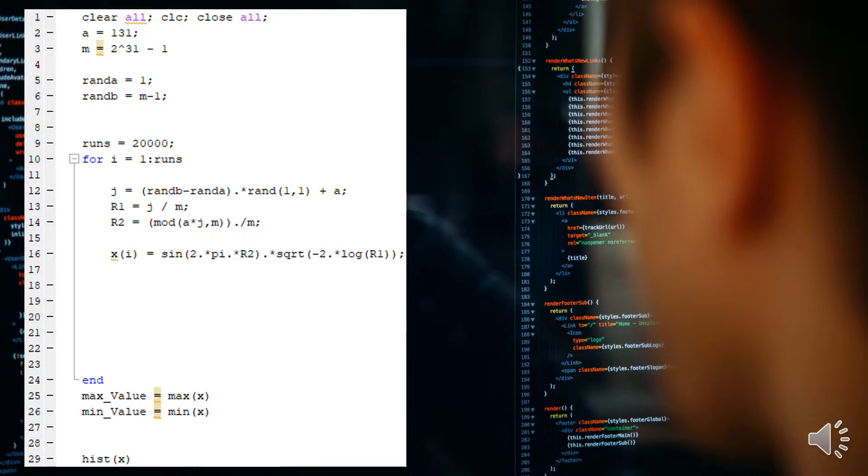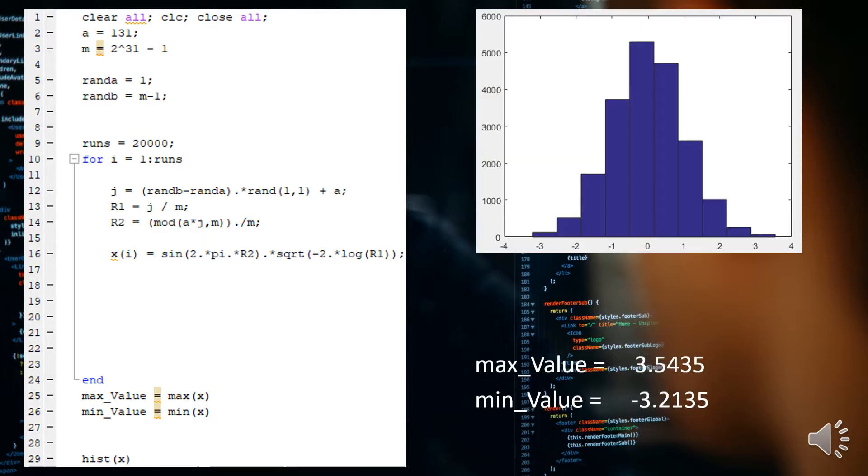Running 20,000 iterations of this, we then want to capture what is the max value in that array of 20,000 values, as well what is the min value. Hopefully what we find is that the value should be no greater than 3.54 and it should be no less than negative 3.21, and we do see that.